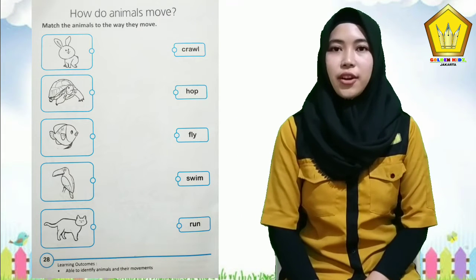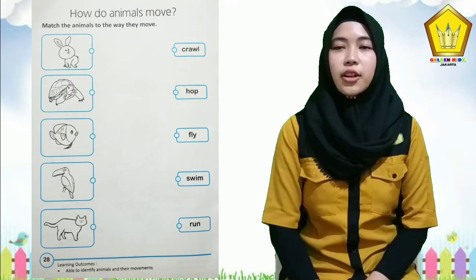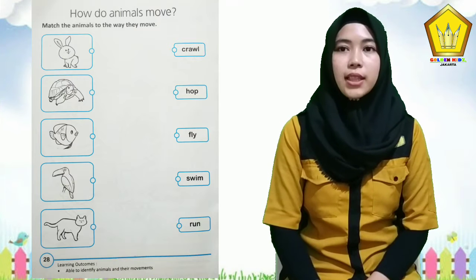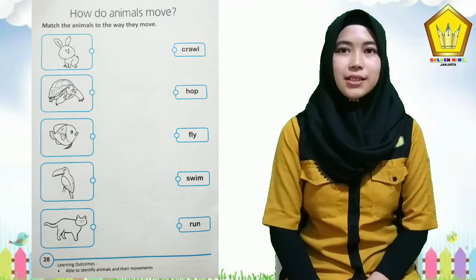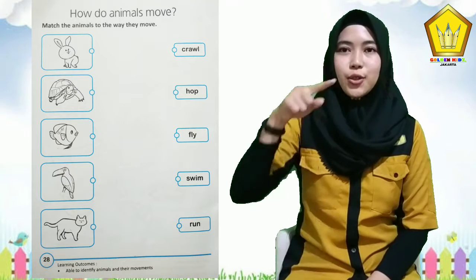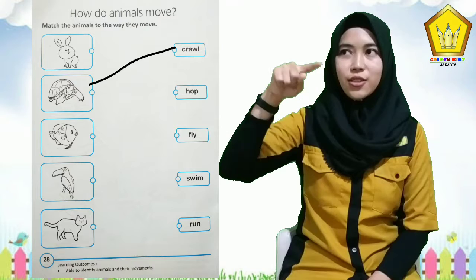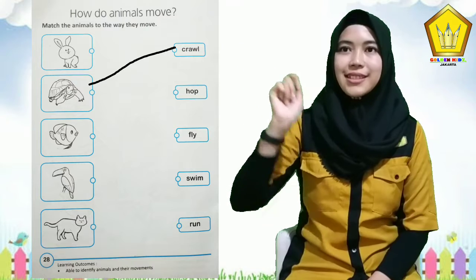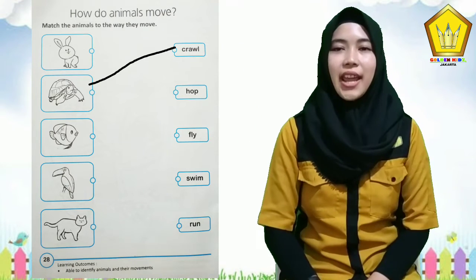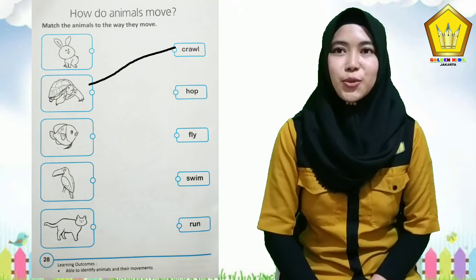And then tortoise — tortoise moves with crawl, so you make a line to crawl, c-r-a-w-l.